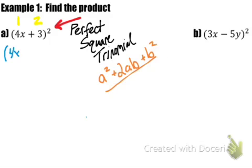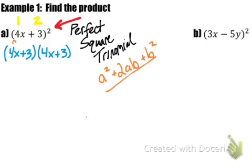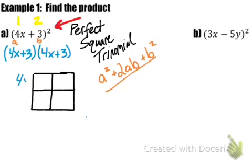So we write down 4x plus 3. Because we are squaring the entire binomial, we cannot distribute the exponent to both terms — that doesn't make sense. We are multiplying 4x plus 3 by itself. Our a term is 4x and our b term is 3. With our boxes, I'm going to write 4x here and 3 here, and the same thing on top, because we're multiplying the binomial by itself.